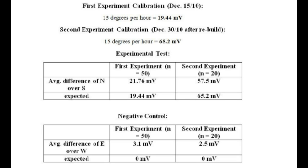And for negative controls, we were expecting around zero for each set of readings. And we got 3.1 millivolts in the first and 2.5 millivolts in the second. So I think this was fairly accurate for this first-pass experiment with this instrument.